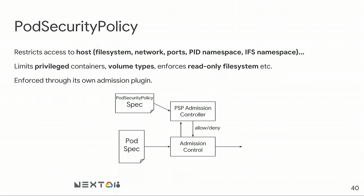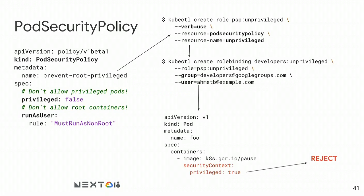Pod security policy is a relatively new feature that restricts host access — including host filesystem, host network, ports, and process ID namespace — for pods. If you want to prevent users from creating privileged containers or containers running as root, this is exactly what you need. In this example, I have a pod security policy that disallows privileged pods and pods running as root. A pod spec with privilege equals true will be rejected by the pod security policy admission controller.